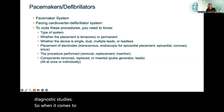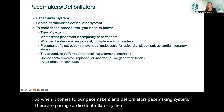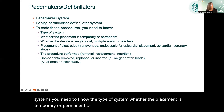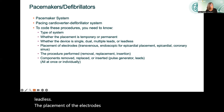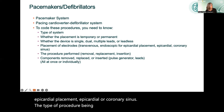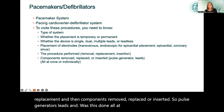For pacemakers and defibrillators, to code these systems you need to know the type of system, whether placement is temporary or permanent, whether the device is single, dual, multiple, or leadless. You also need to know the placement of the electrodes — transvenous, endoscopic, epicardial, or coronary sinus — the type of procedure performed such as removal or replacement, and what components were removed, replaced, or inserted, such as pulse generators and leads, and whether this was done all at once or individually.